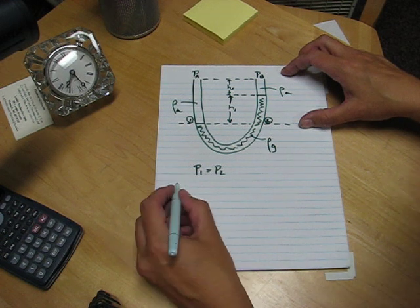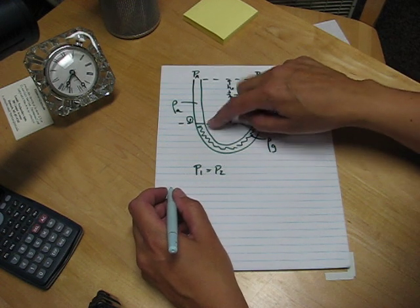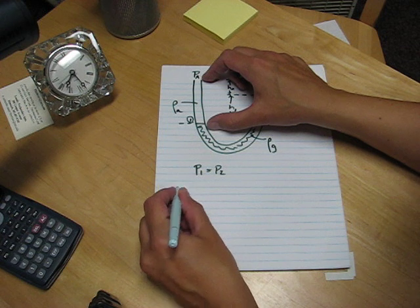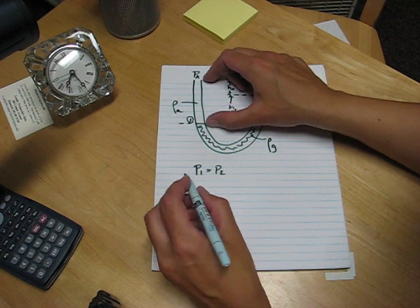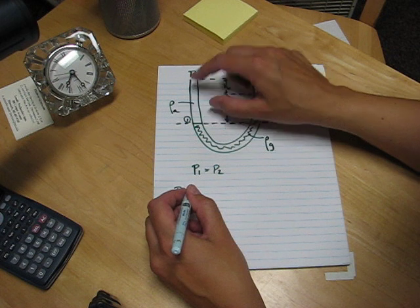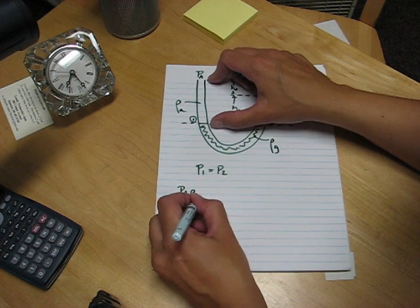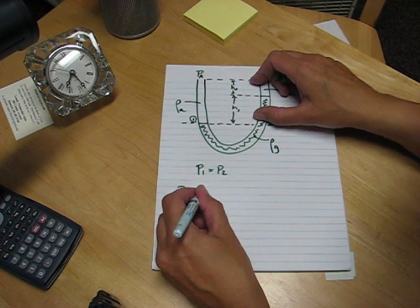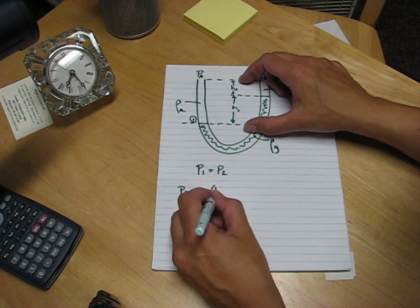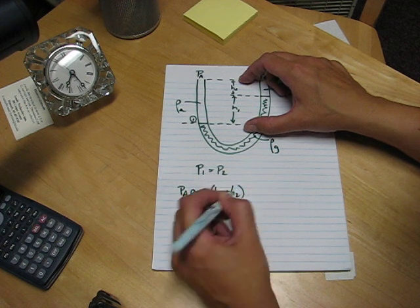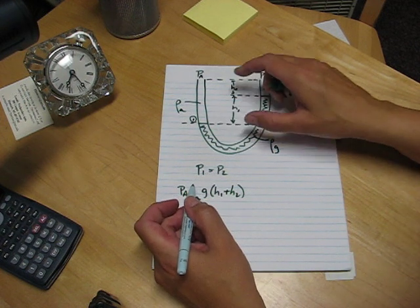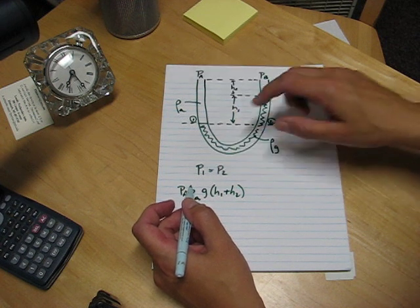So P1, the pressure at the bottom of this column of fluid, is the pressure at the top plus ρgH, where ρ is the fluid that I have, ρ_A, times g times the height, which is H1 plus H2. That's the pressure at the bottom of this column of fluid, which is P1.